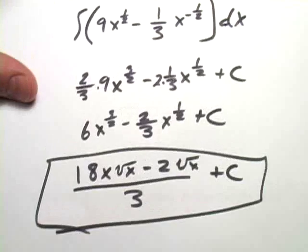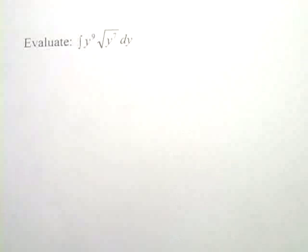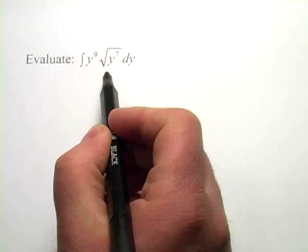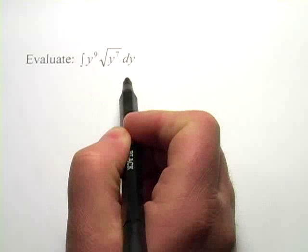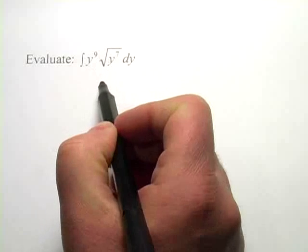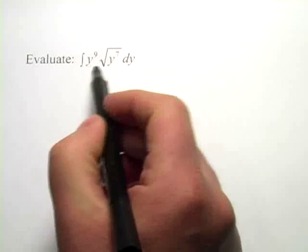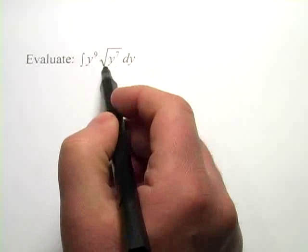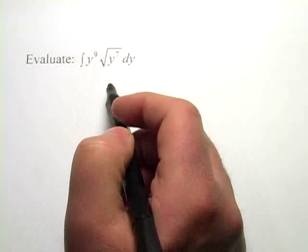Let's take a look at one more. Here we have the integral of y to the 9th times the square root of y to the 7th. And I think it would be good to combine these two terms before we go any further, since we don't really have a rule yet to figure out what the integral of a product is.